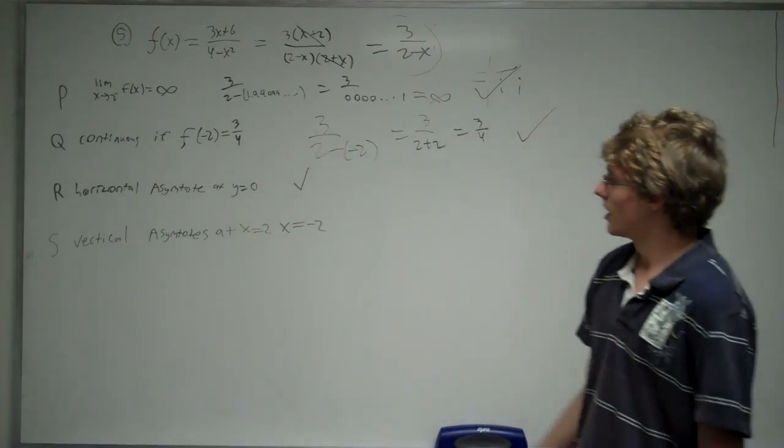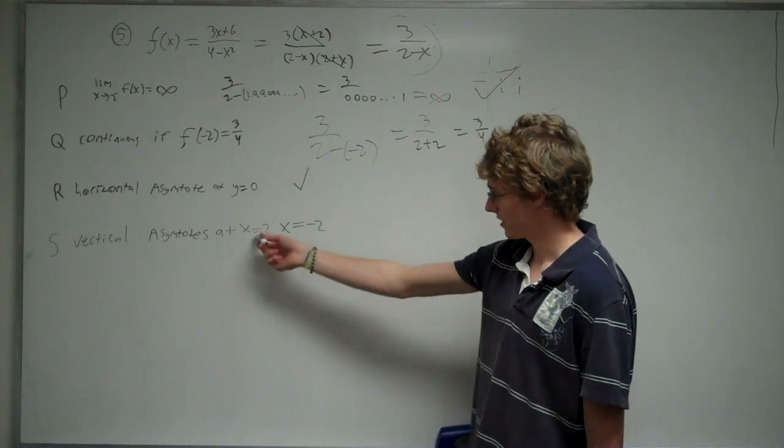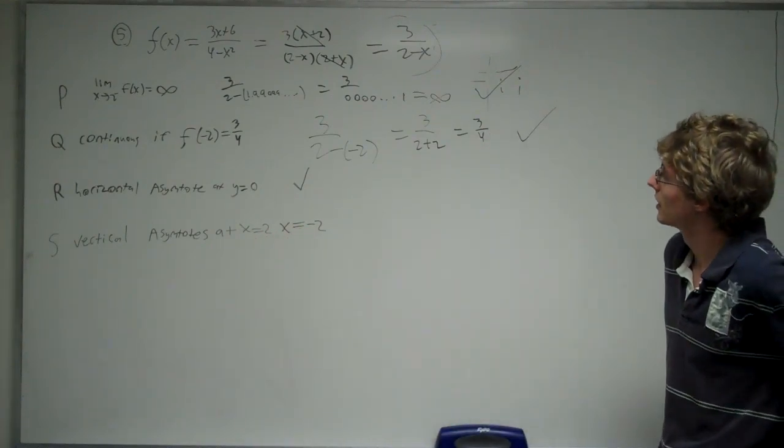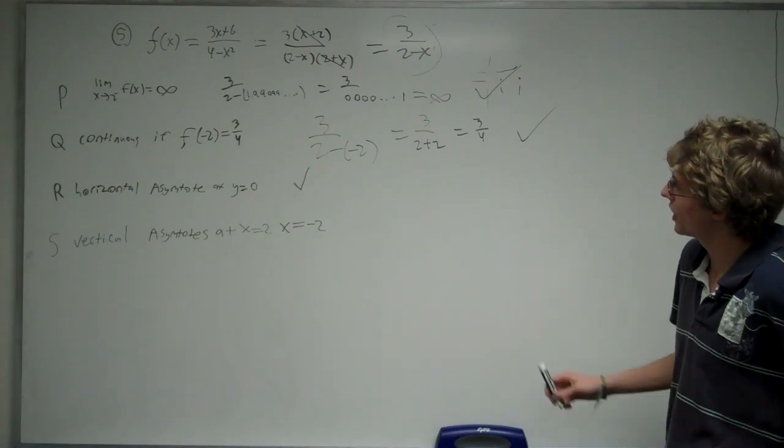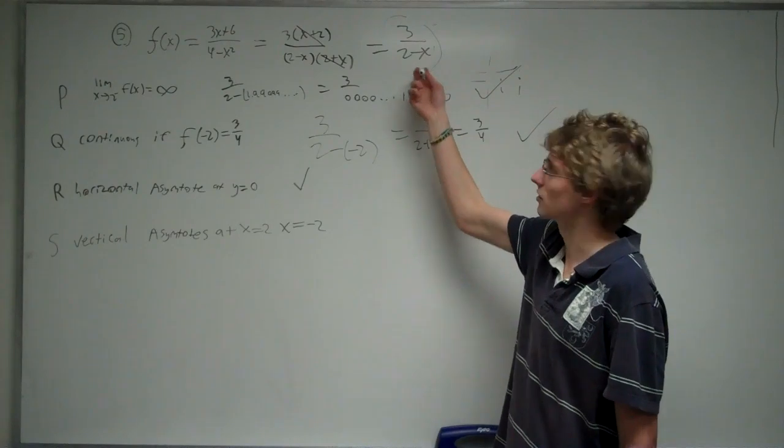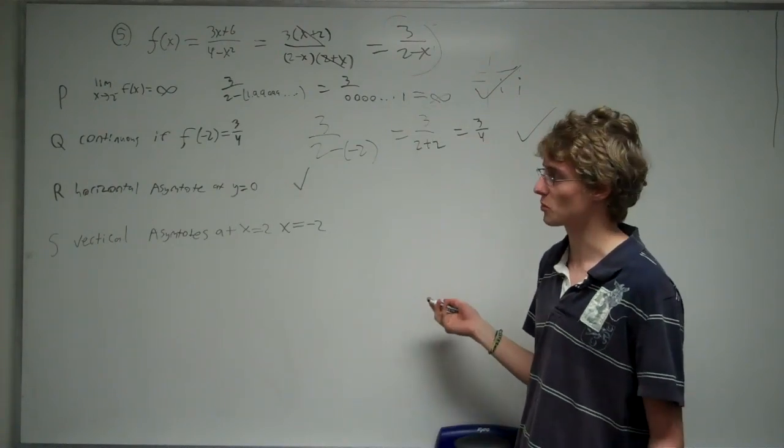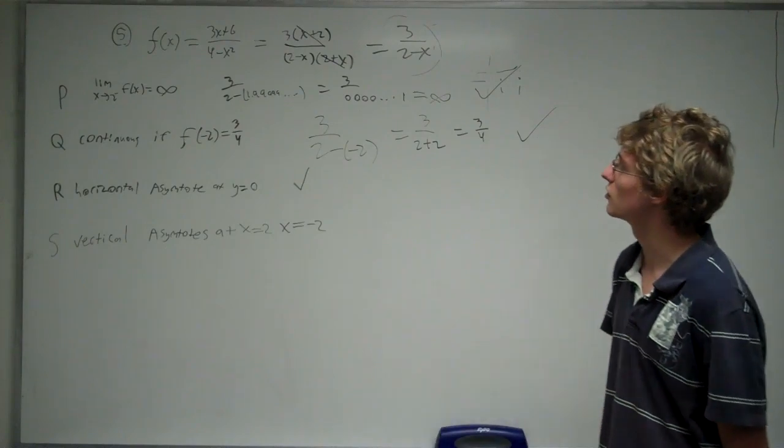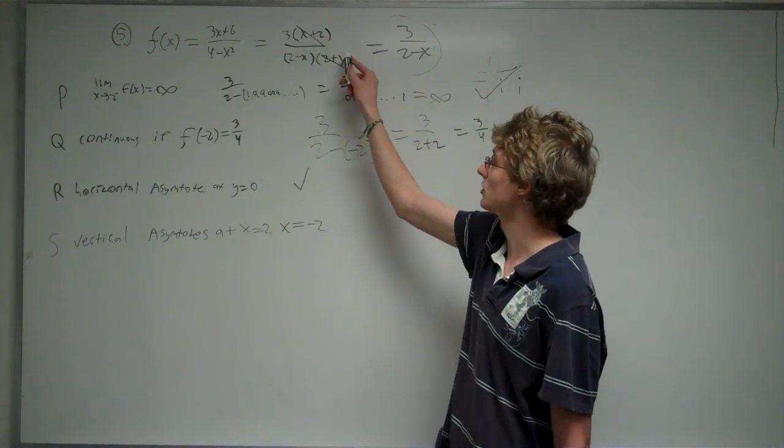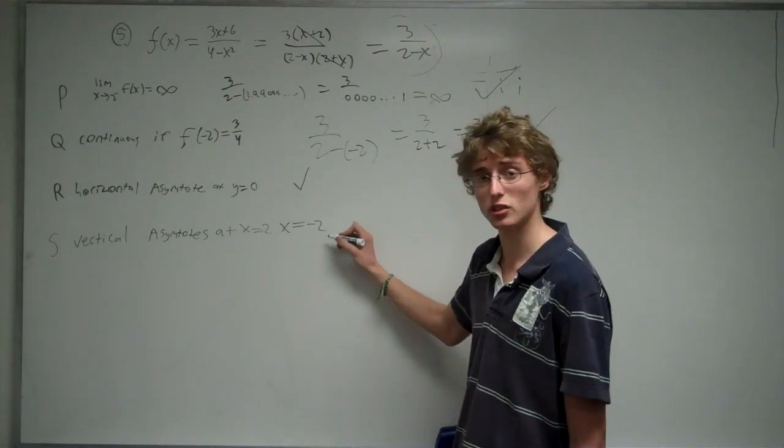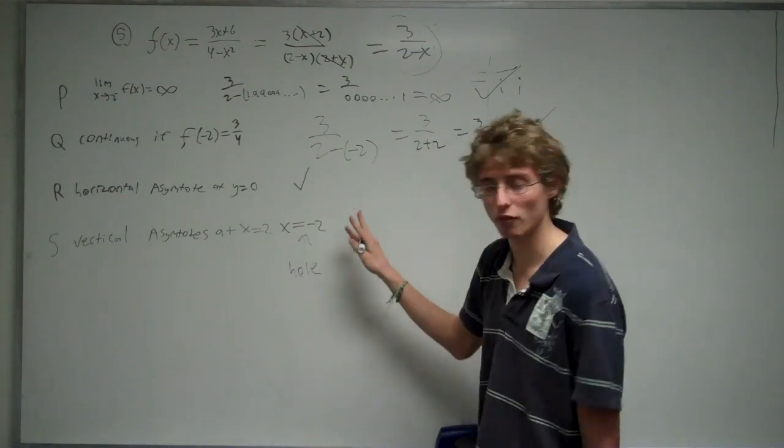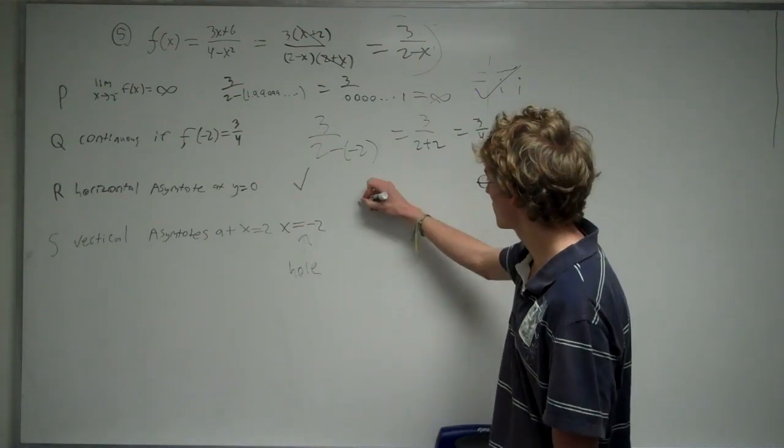The last statement: there's a vertical asymptote at x equals 2 and x equals negative 2. For this one, there is a horizontal asymptote at x equals 2, so when you plug in 2 here, you're going to have 0 in the denominator, so it's an asymptote. However, at x equals negative 2, if you plug that in, it would be 0, but the (x+2) is cancelled. So instead of a vertical asymptote being here, what you're going to get here is a hole, not a vertical asymptote, so this is false.